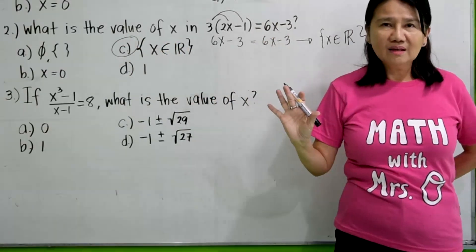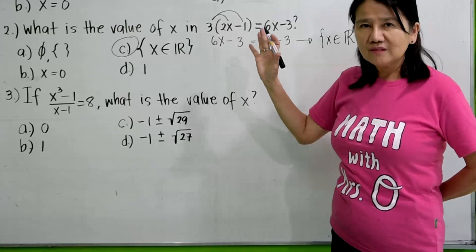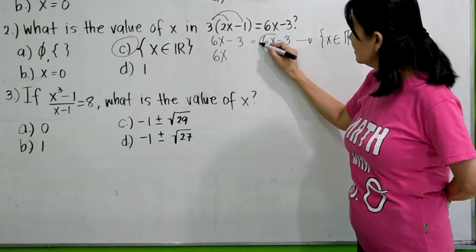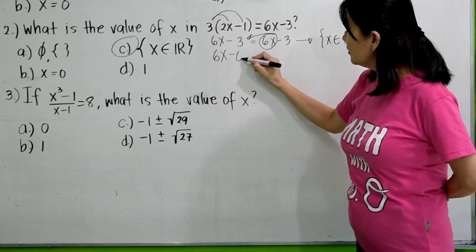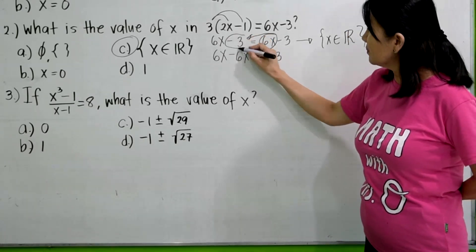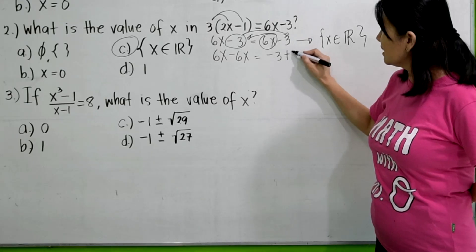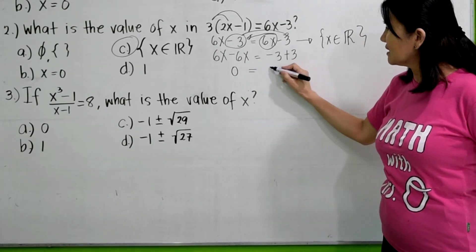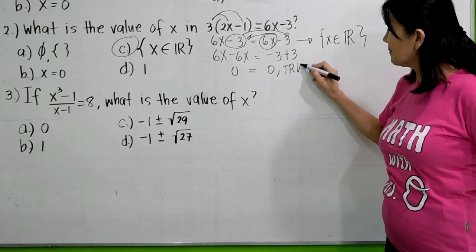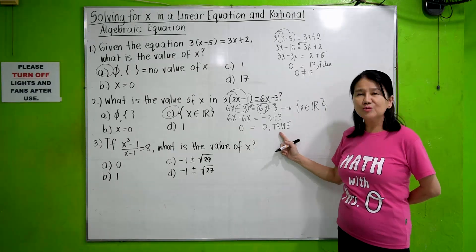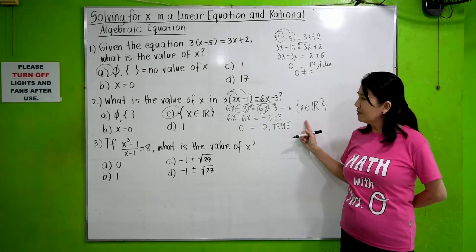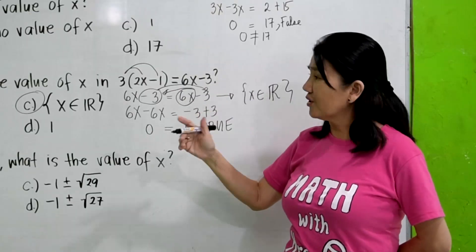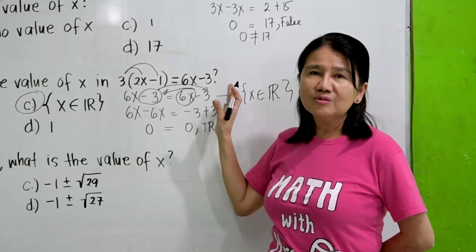At this point, you can already conclude that the value of X can be any real number, which is letter C. But let us say you didn't notice that and continue solving. We transpose 6X to the other side to get negative 6X equals negative 3, then transpose to get 6X minus 6X equals 0 equals negative 3 plus 3 equals 0. This is a true statement, meaning any real number can be a value for X — if you substitute any value for X, the left side and right side will always be equal.